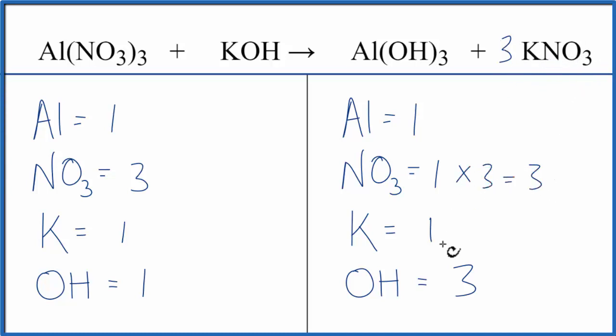And then one times three for the potassium. Now the potassiums aren't balanced. But if I put a three in front of the KOH, I have one times three. That fixes the potassiums. And because the three applies to everything, I have one of the hydroxides, the OH, times three. Gives me three of those, and I'm done.